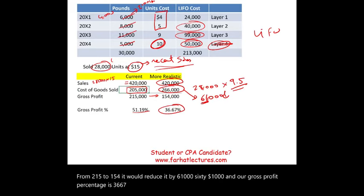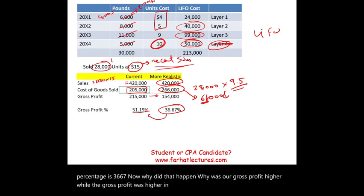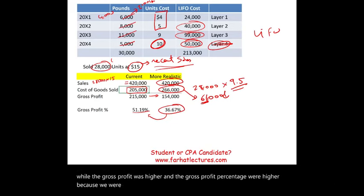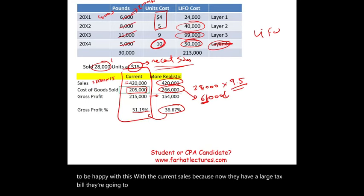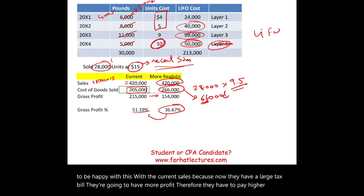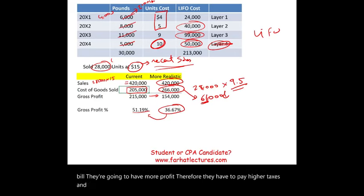Why was our gross profit higher? Because we were doing LIFO liquidation. The company will not be happy with this because now they have a large tax bill — more profit means higher taxes. From an investment perspective, you don't want to mislead investors.